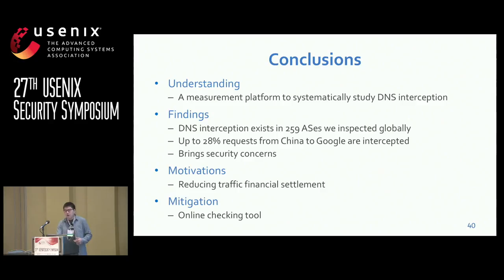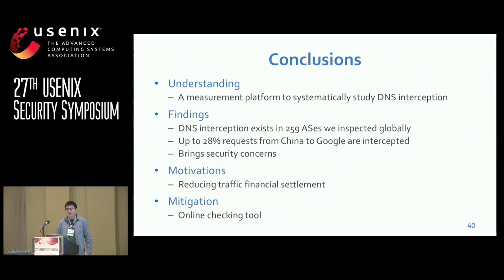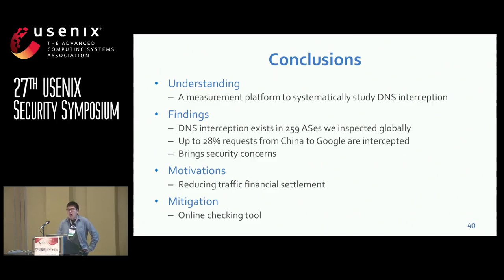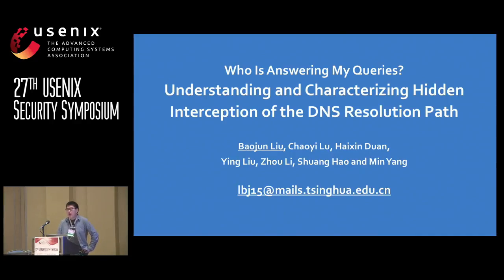Finally, a brief summary of this talk. By detecting and measuring DNS interceptions, we provide an understanding of this hidden behavior. We collect clients from more than 3,000 ASes and find over 250 ASes exhibiting interception behaviors. Especially in China, up to 28% of DNS requests to Google DNS are intercepted. This behavior brings security concerns. We discuss the motivation behind the DNS interception and release an online checking tool. In the meantime, we are moving forward with our upcoming project to try to identify different kinds of interceptors. Thank you so much for your attention — I'm happy to take any questions.